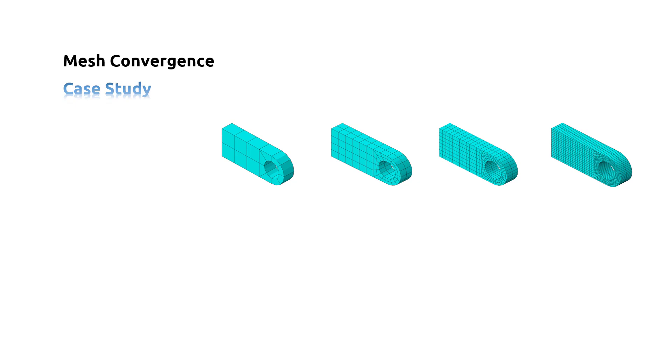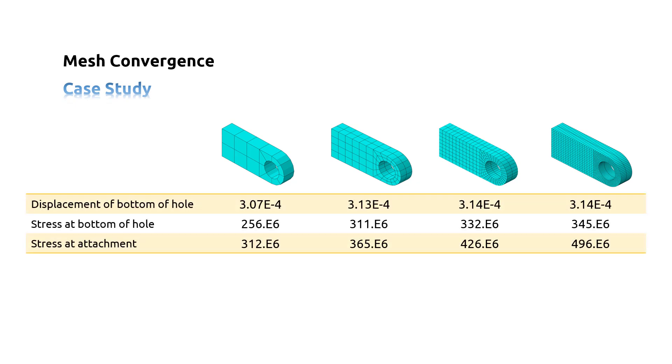The results of the four different mesh densities at the indicated points are shown in the table. These three points are chosen to consider the influence of the mesh density on three particular results from this model: the displacement of the bottom of the hole, the peak Von Mises stress at the stress concentration on the bottom surface of the hole, and the peak Von Mises stress where the lug is attached to the parent structure.